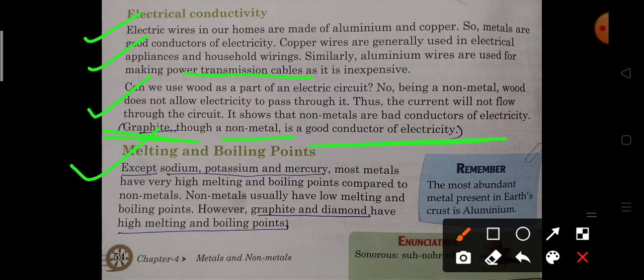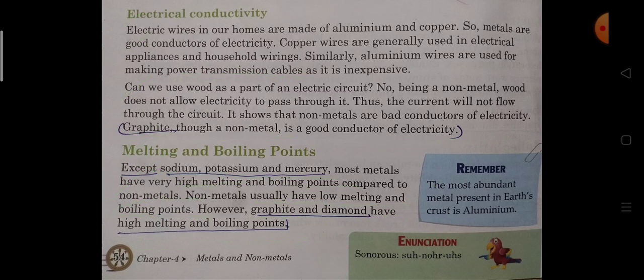Melting and boiling points: Except sodium, potassium and mercury, most of the metals have high melting point and boiling point compared to non-metals. Non-metals have low melting and boiling points. However, graphite and diamond have high melting and boiling points.